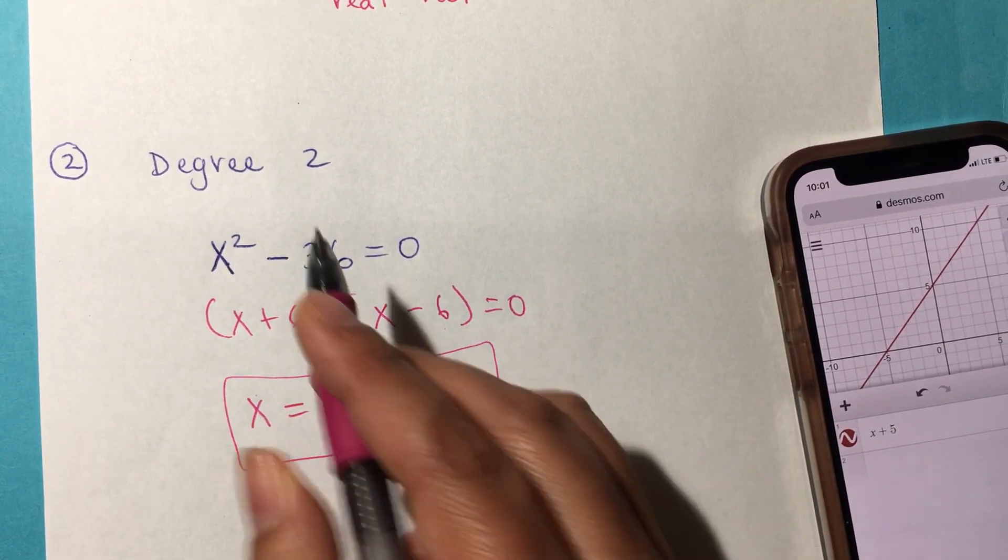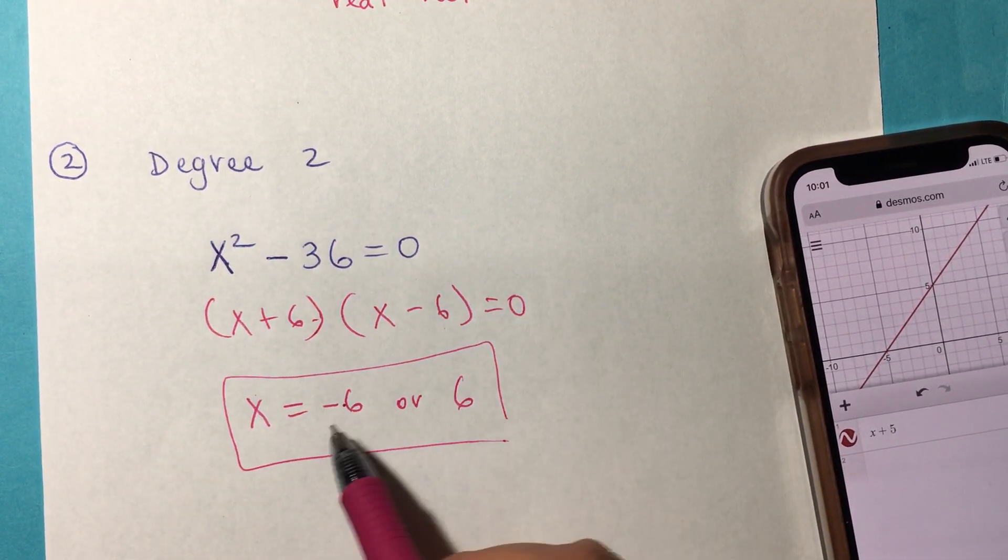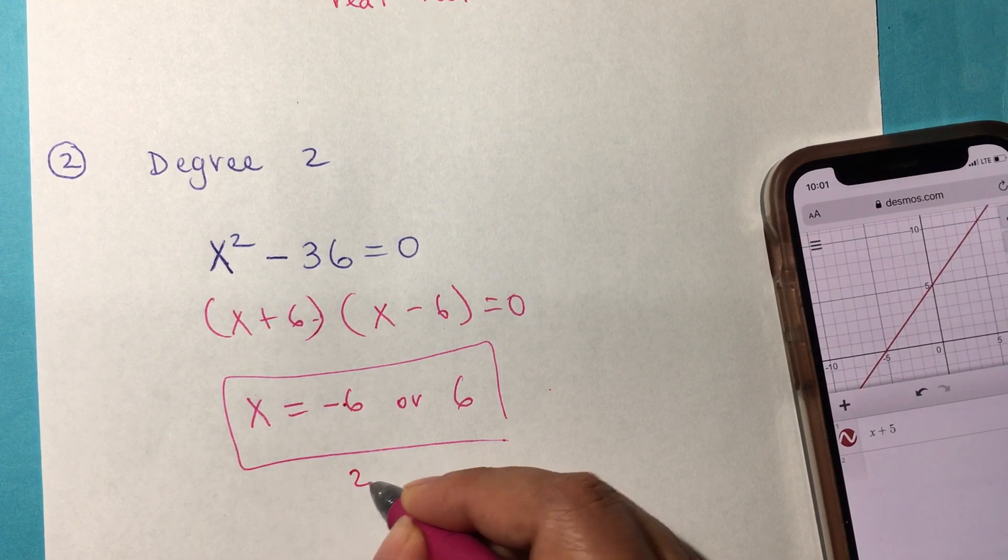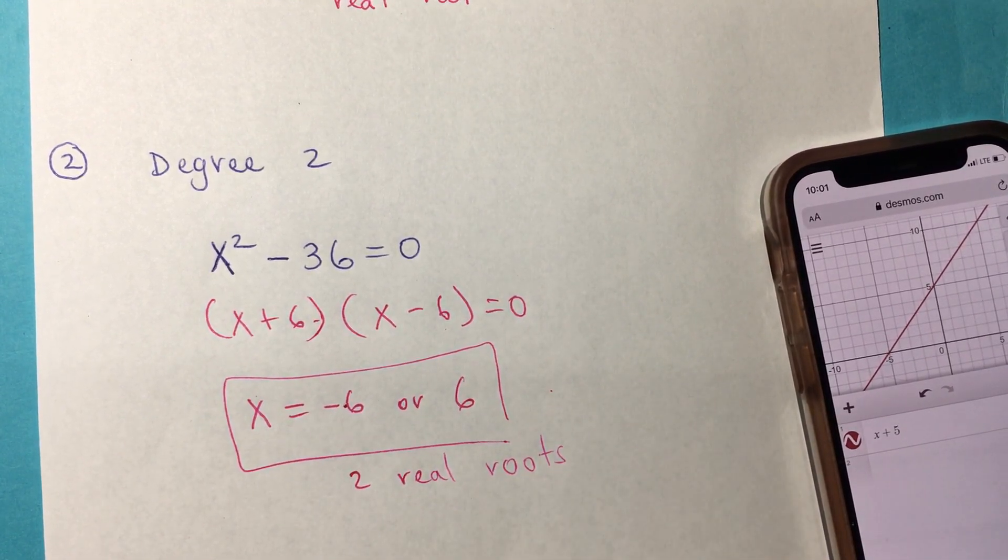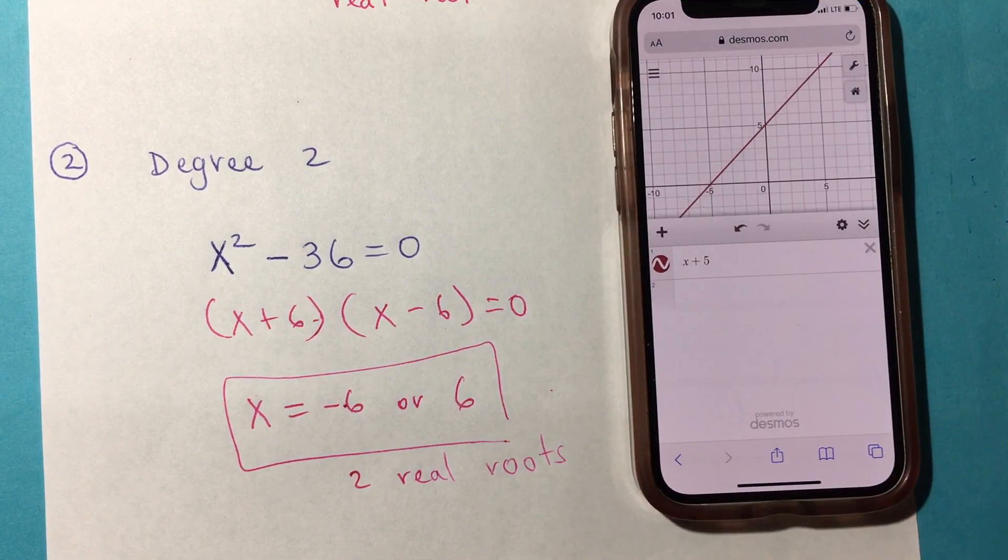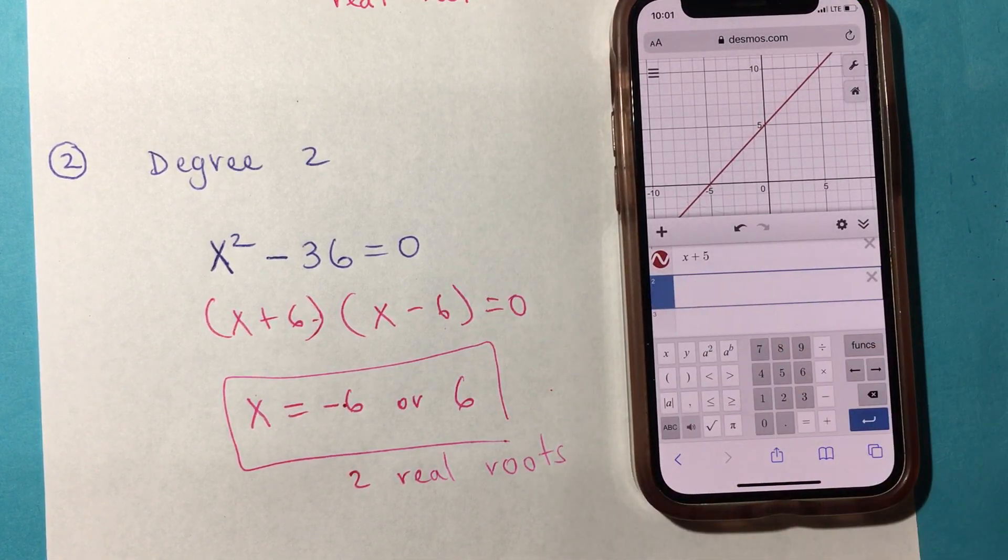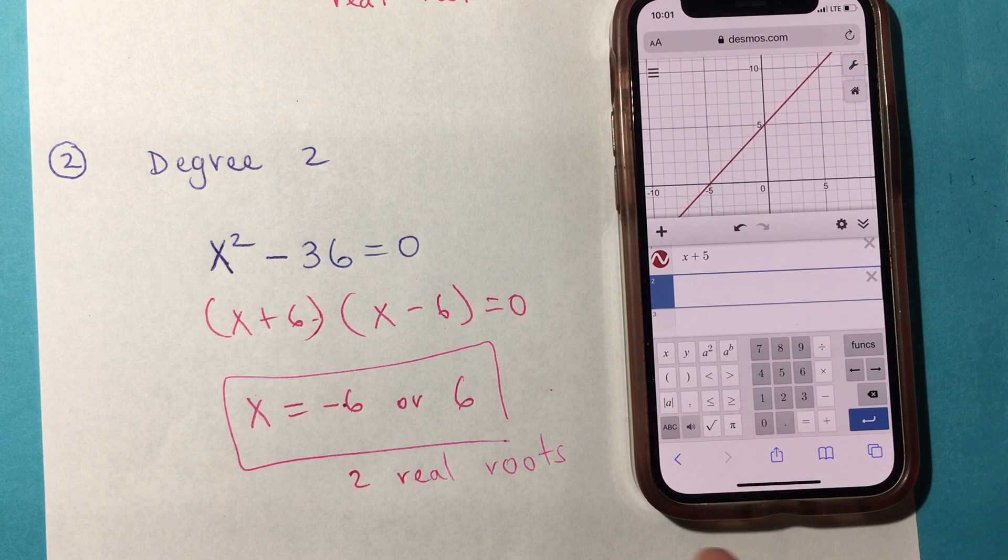Or the other possibility is for this to be 6. As you can see, this is degree 2, and you have two solutions or two roots. Again, they are real roots. For the demonstration, I can keep that one in there in different colors.